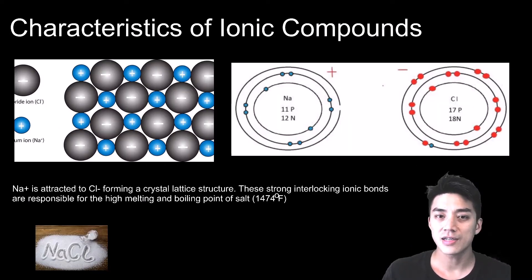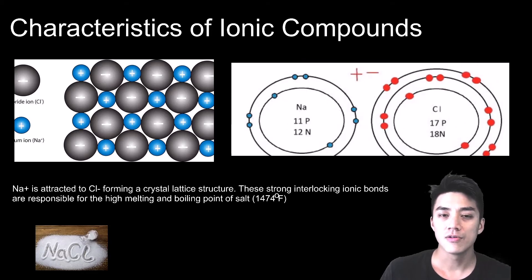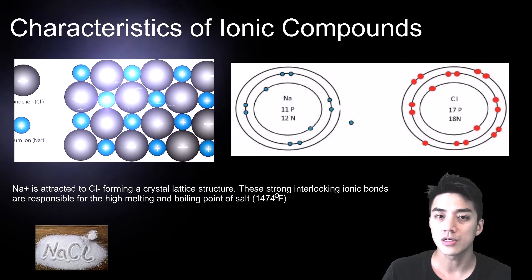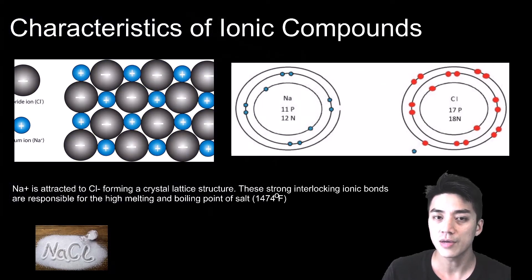The sodium cation is attracted to the chlorine anion forming a crystal lattice structure. The strong interlocking ionic bonds in a crystal lattice structure is what's responsible for the really high melting points in salts like sodium chloride.